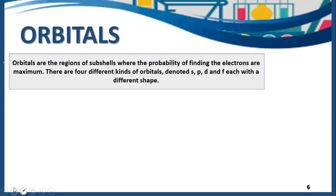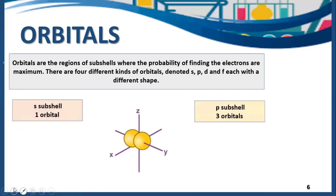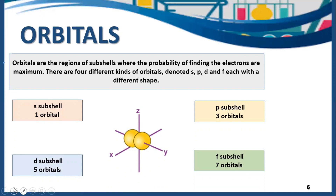Then come orbitals. Orbitals are the regions of subshells where the probability of finding the electrons is maximum. There are 4 different kinds of orbitals, denoted by s, p, d and f, same as subshells, and they all have different shapes and different numbers of orbitals. Orbitals are derived from subshells, just as subshells are derived from shells. S subshell has 1 orbital, p has 3, d has 5, and f has 7. The s orbital is spherical in shape, p is dumbbell-shaped, and f is elongated dumbbell-shaped.